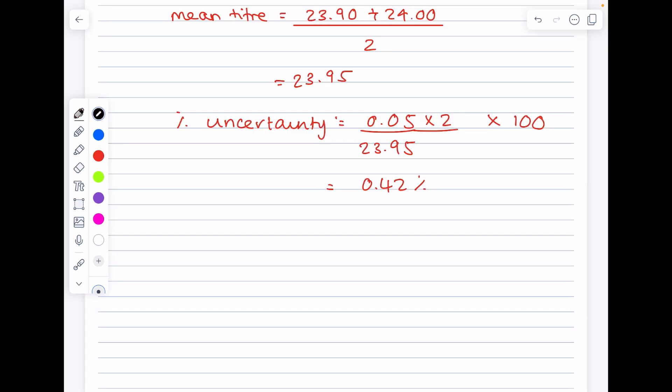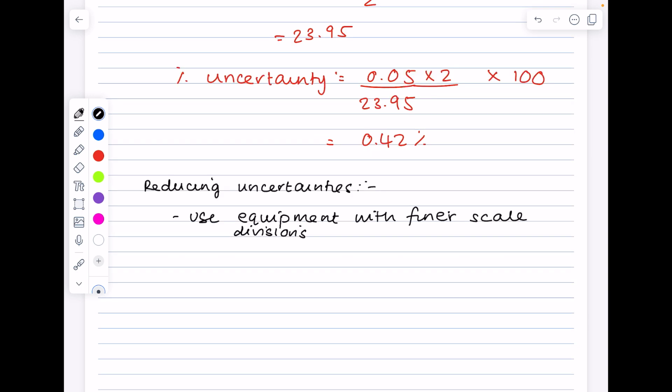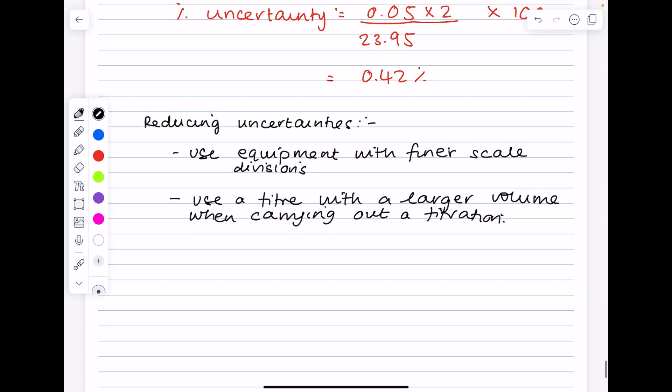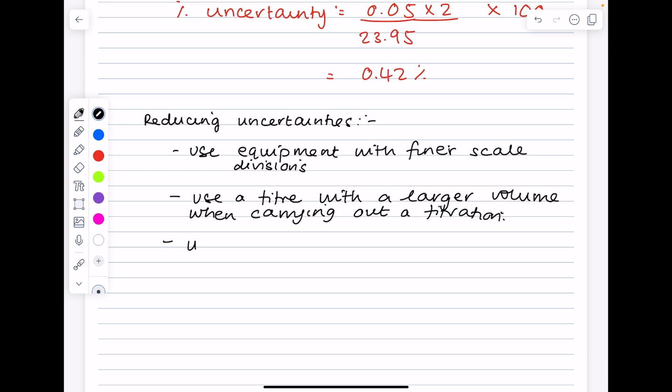Don't forget to be able to list ways in which uncertainties can be reduced. So we could use equipment with finer scale divisions, such as a balance that has more decimal places. We could use a titer with a larger volume when carrying out a titration, and similar to that second point, use a larger mass when weighing a solid.